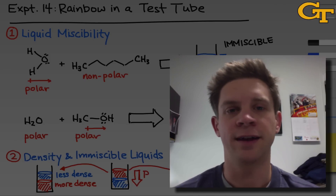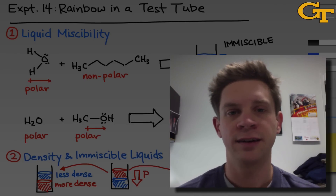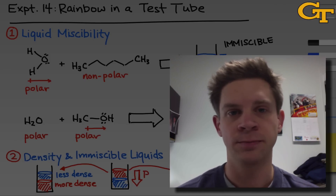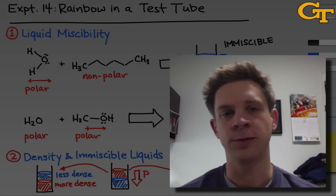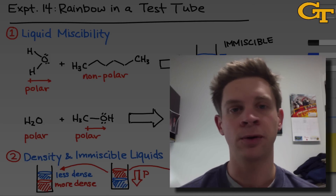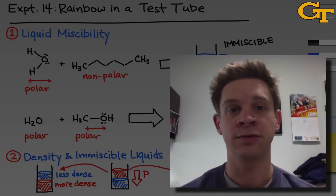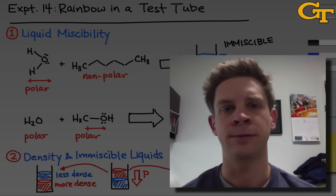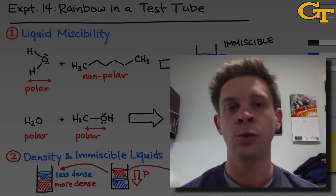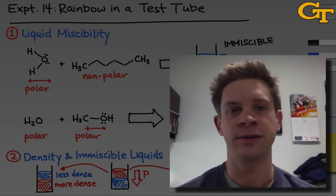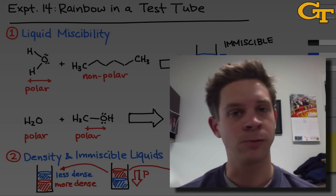Experiment 14 in Chem 1211 is titled Immiscible Fluids: Rainbow in a Test Tube. The overarching goal of this experiment is to construct a chemical rainbow consisting of layers of immiscible fluids sitting one on top of the other, with each layer colored with a different dye compound forming a rainbow.